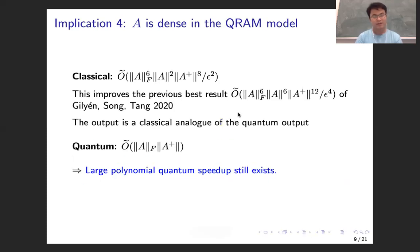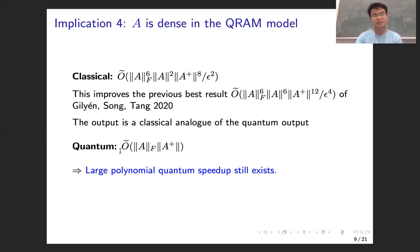The last one is the most general case, and this is our main result. It improves the previous result of Gilyén, Song, and Tang a little bit — just improving the dependence on the norm of A, the norm of A inverse, and epsilon. In this case, the output is not a vector anymore; it is a classical analog of the quantum state of the solution, corresponding to the output of the quantum algorithm. If we use the block encoding method, the complexity is just linear in these two norms. So in the most general case, we still have a very large quantum polynomial speedup.